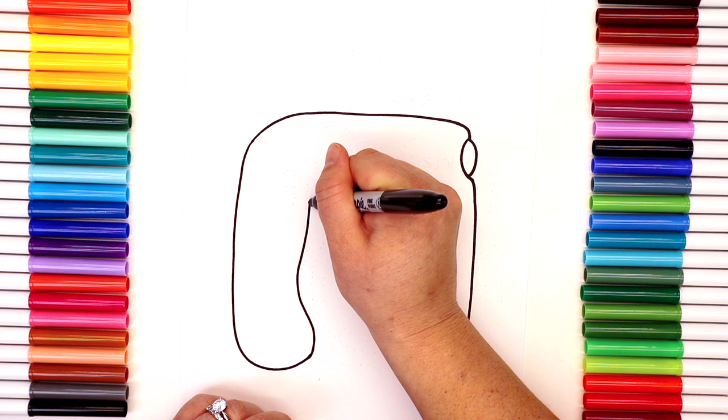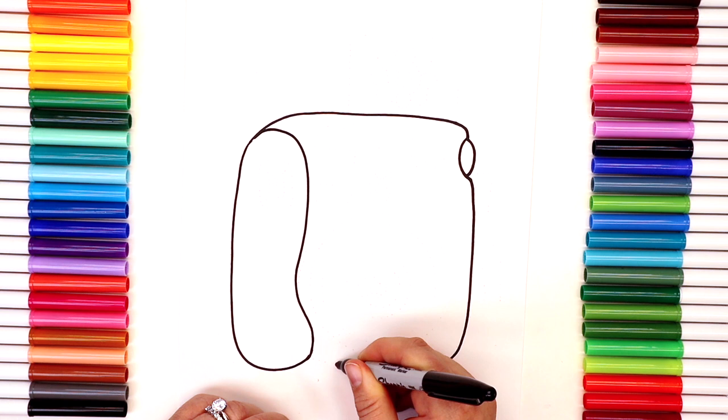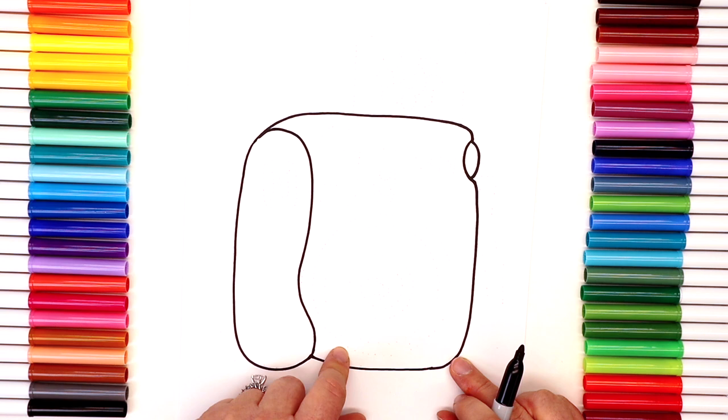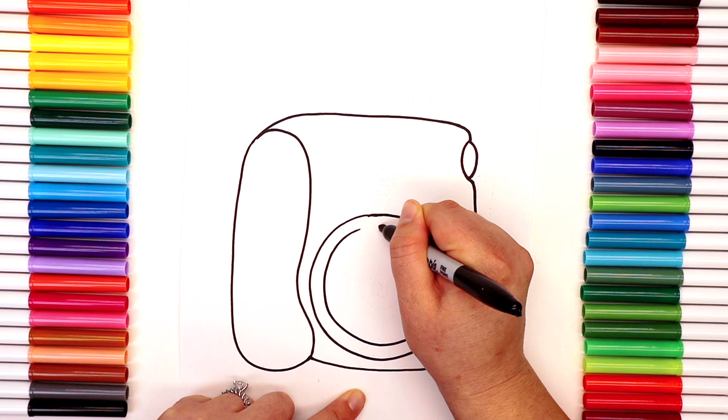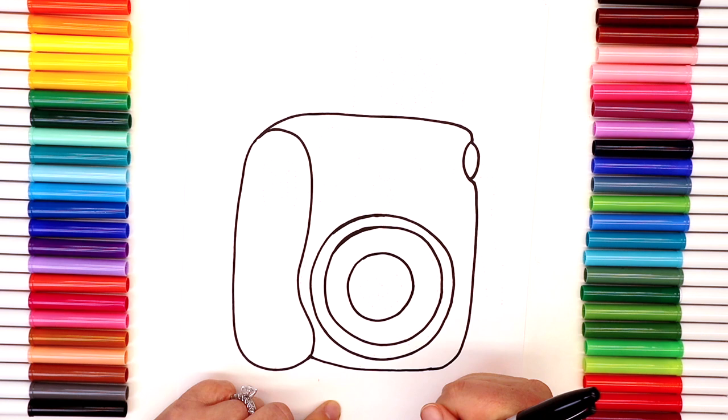Now we're going to start adding on some circles and they're going to progressively get smaller and smaller. You might want to walk around the house and try to find a few different sizes just to help you out with this step, or you can freehand it like I am. It's not going to be perfect but that's okay.